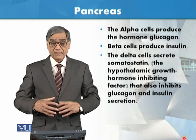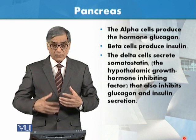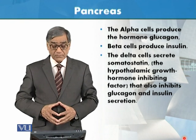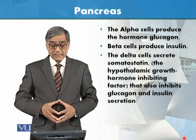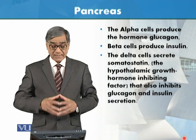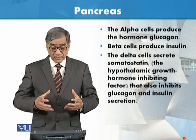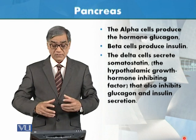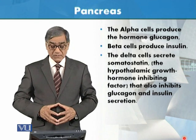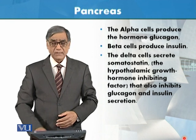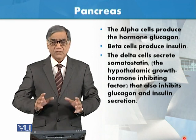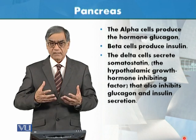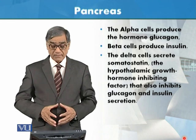Now we need to understand the functions of each cell type. Alpha cells produce the hormone glucagon. Beta cells produce insulin. Delta cells create somatostatin, which is under the control of the hypothalamic growth hormone inhibiting factor. Somatostatin also inhibits glucagon and insulin secretion, helping to control these chemical factors.